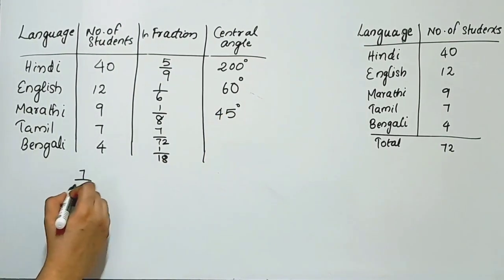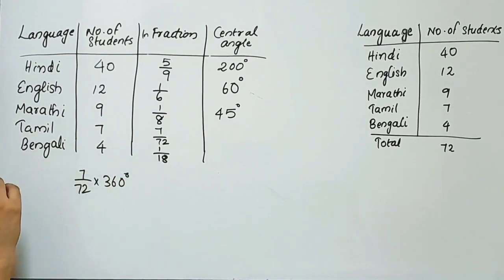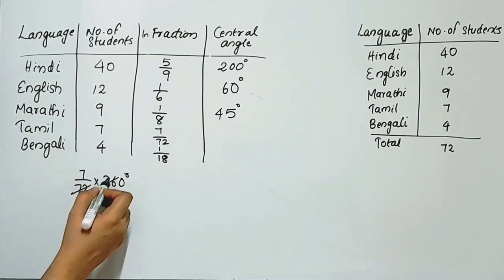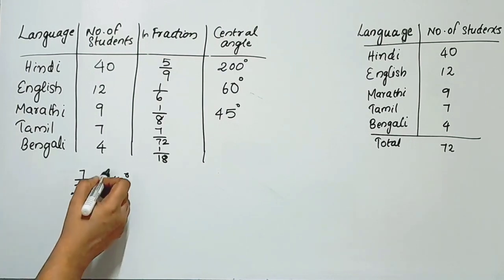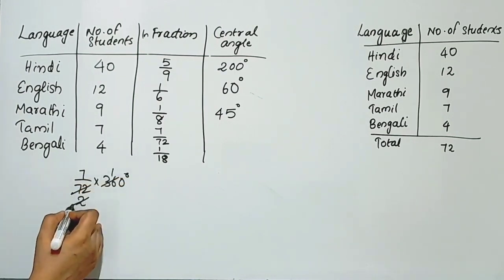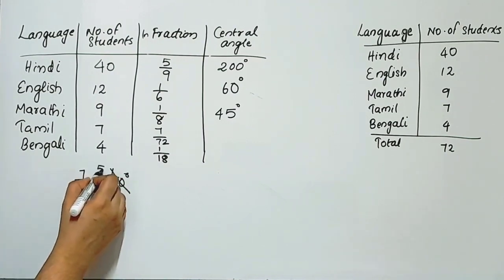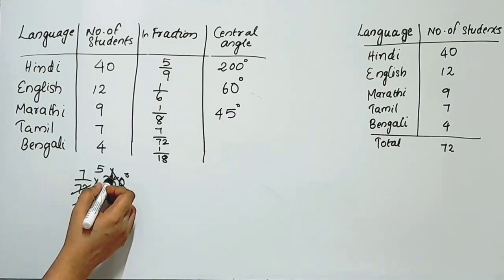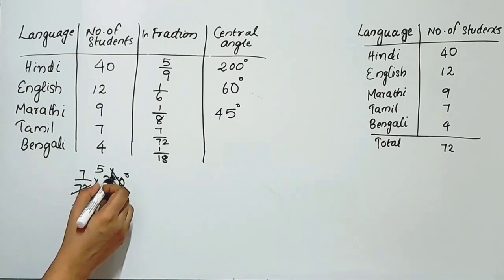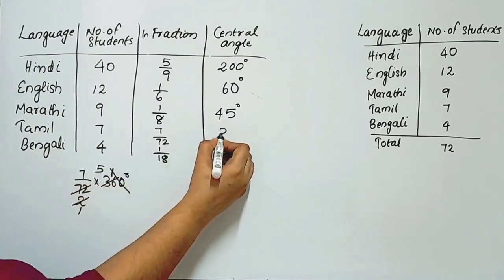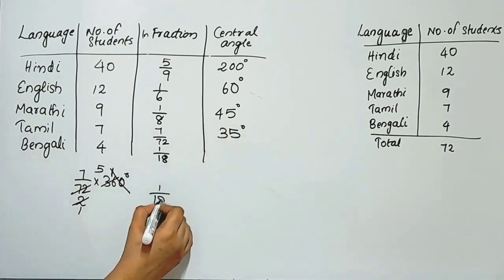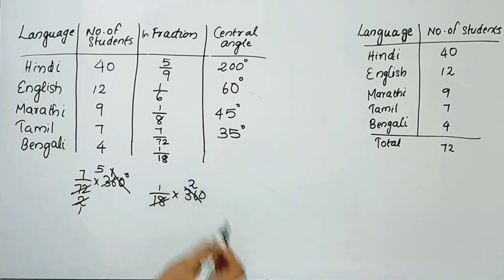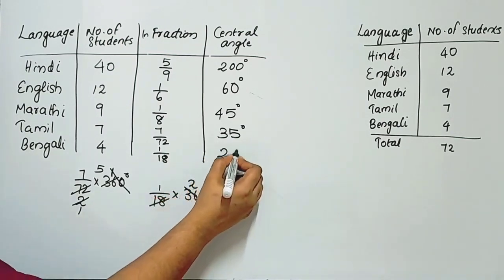Tamil: 7 by 72 into 360 degrees. Here 36 times 2 is 72, so we simplify. 7 times 5 is 35 degrees. Bengali: 1 by 18 into 360 degrees. Since 18 times 2 is 36, we get 20 degrees.